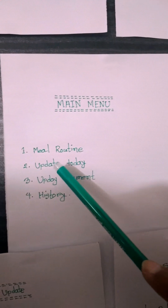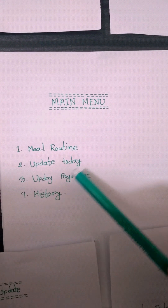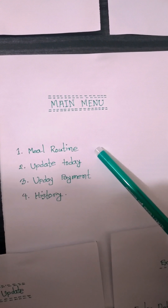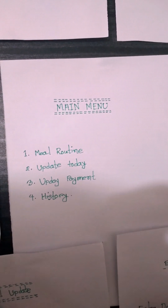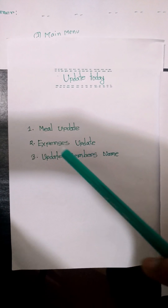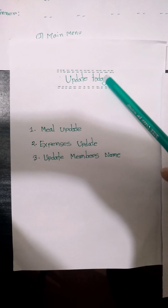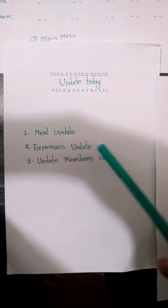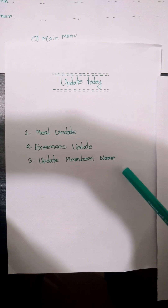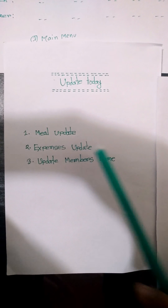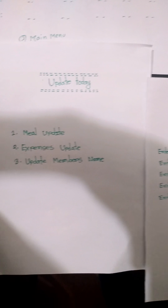From the main menu, we select option two: update today. If we press two, then we go to the update today page. In update today, we see three sub-options: meal update, expense update, and update member's name. If we press on meal update, then we go to the meal update page.